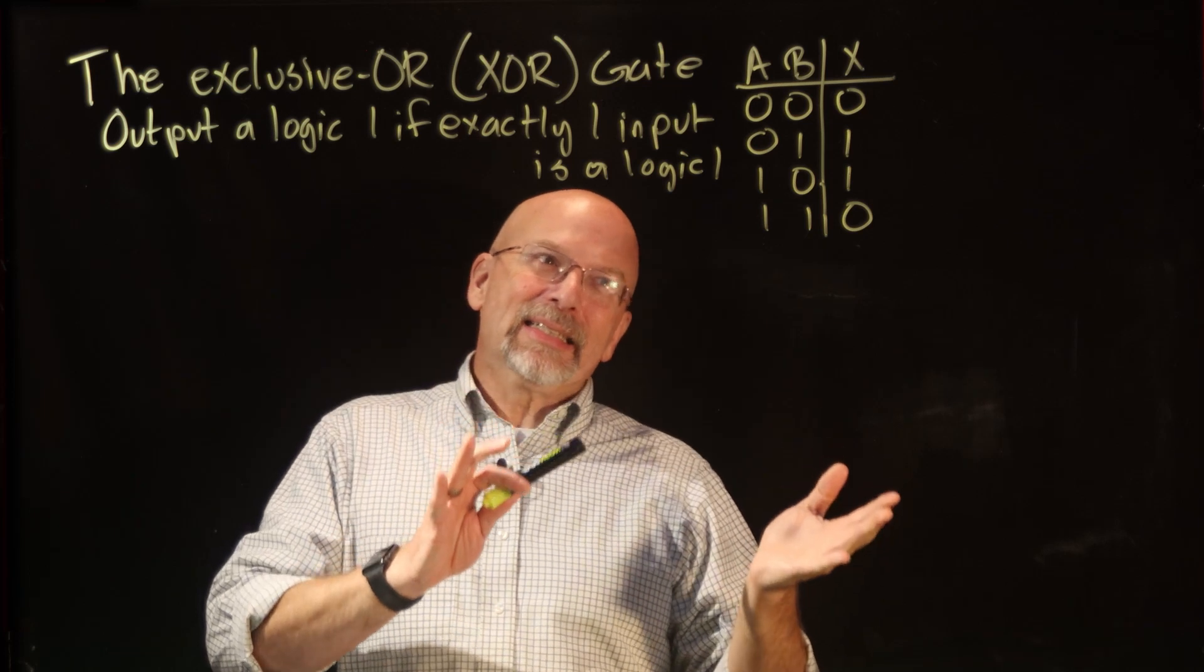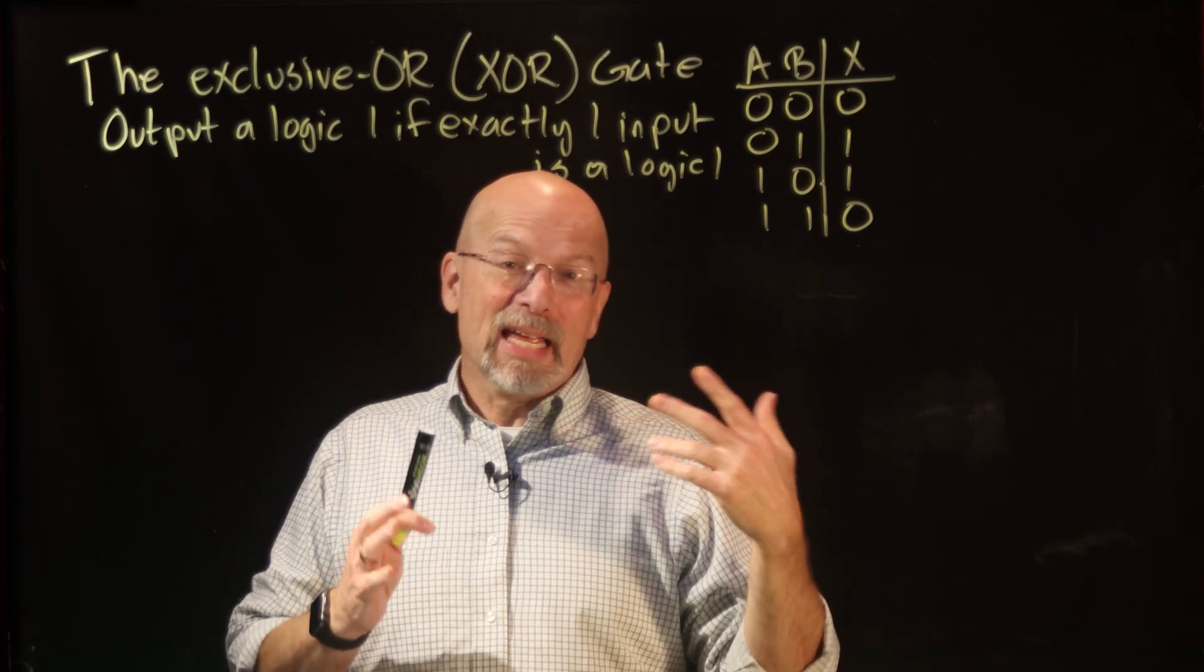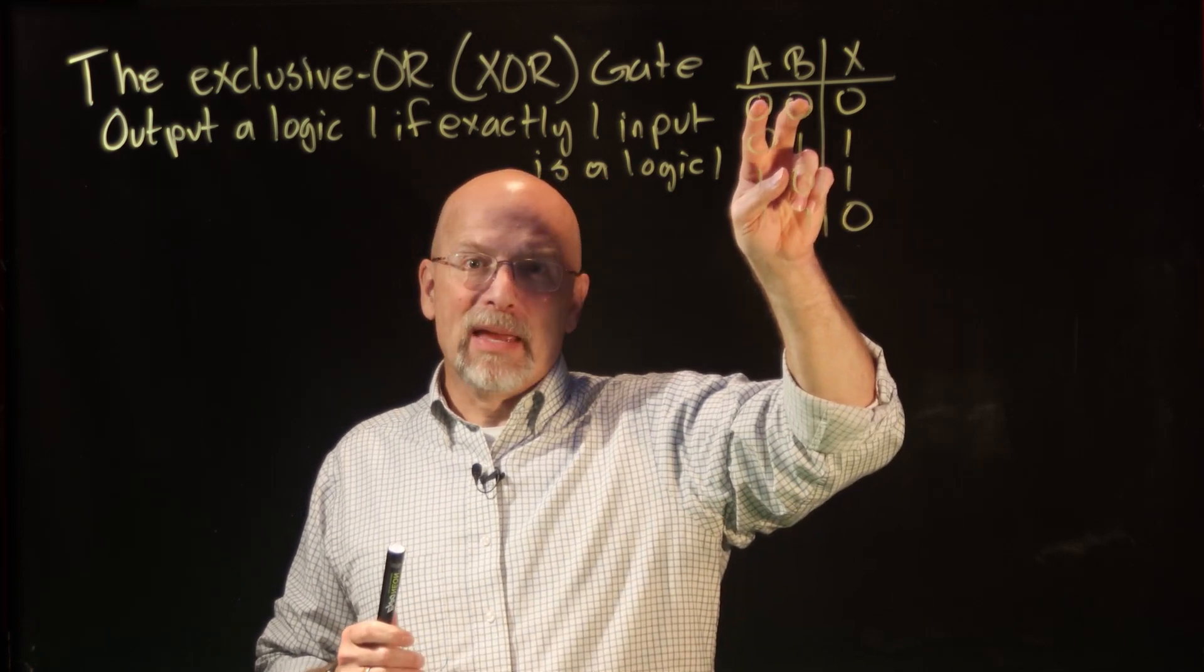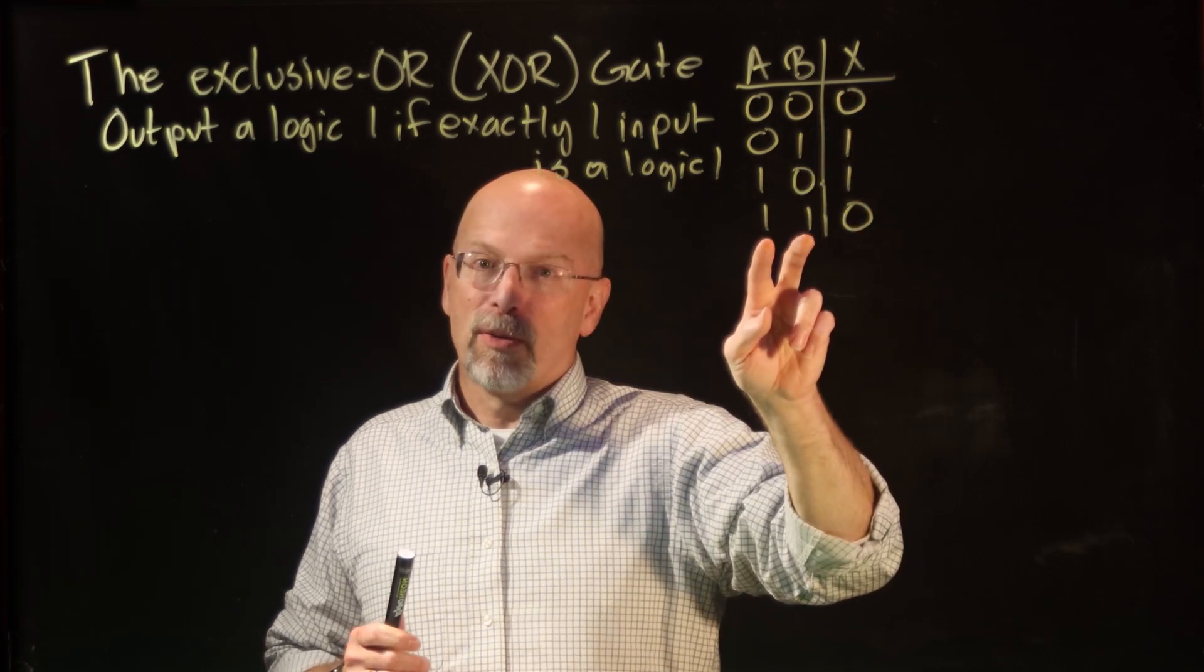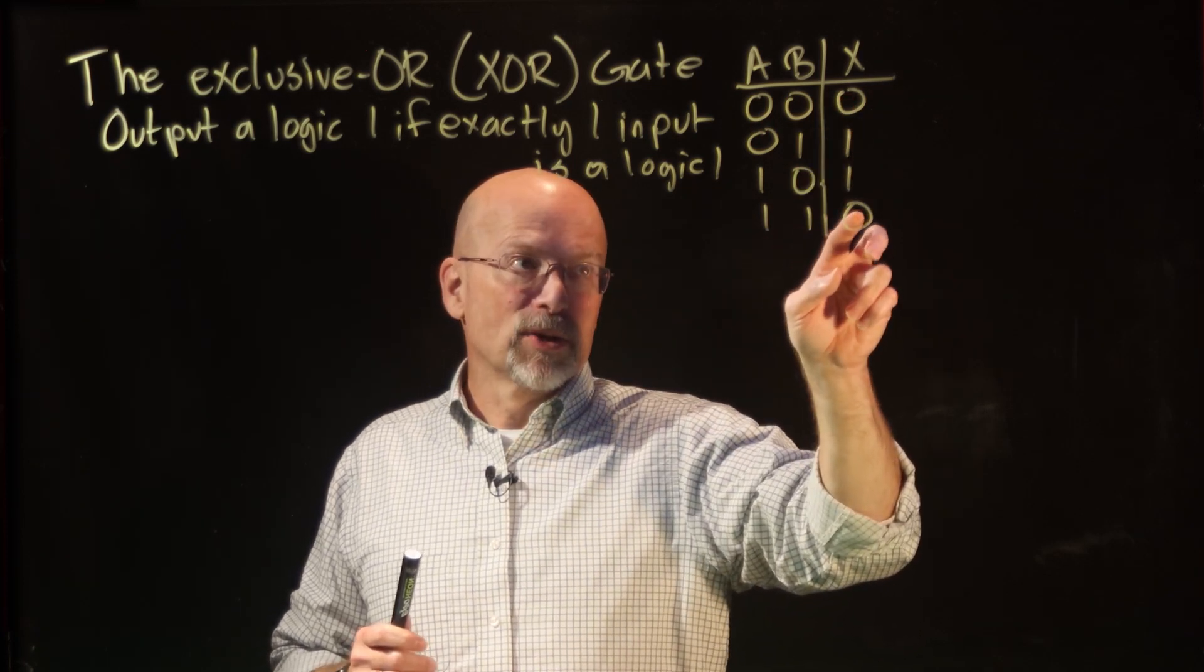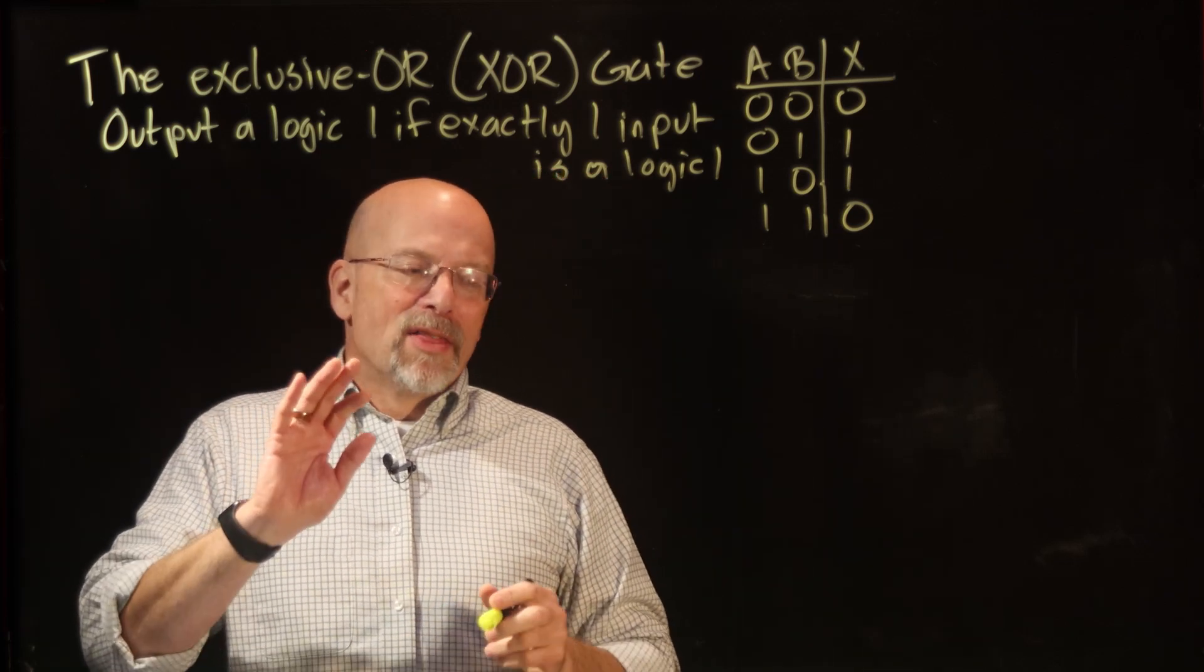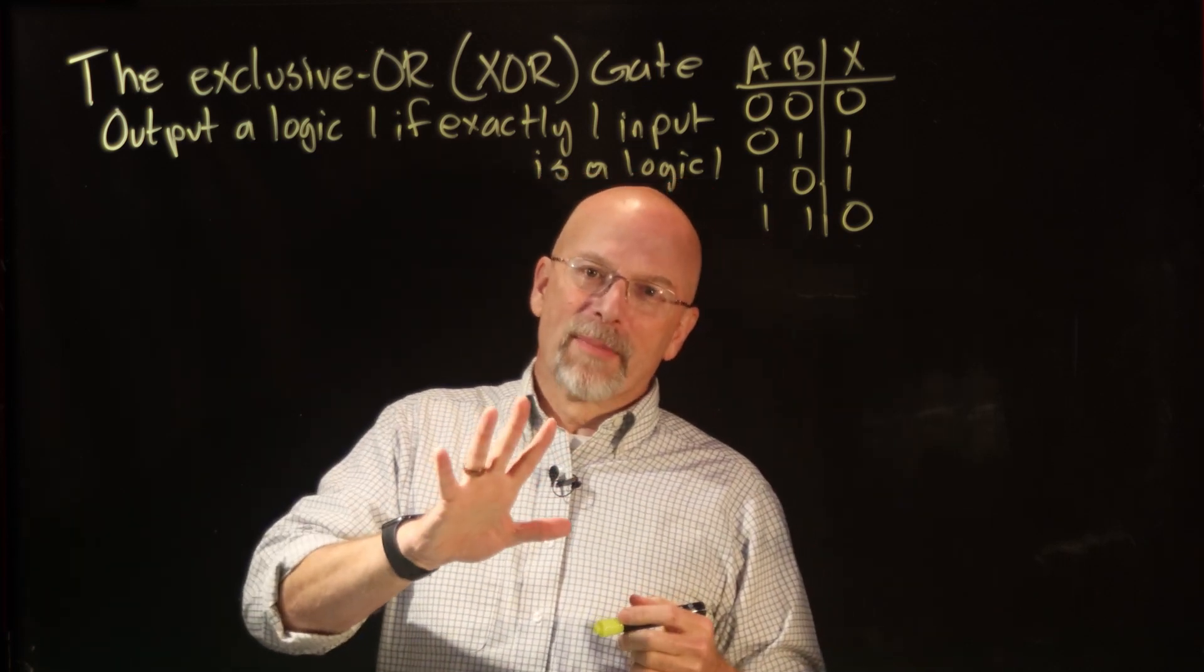It's a really cool little gate because it compares things. If A and B are both the same, both 0, you output a 0. If they're both 1s, you output a 0. The only time you output a 1 is if they're different.